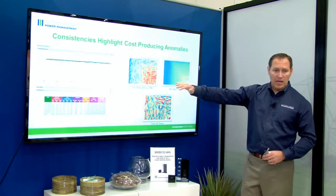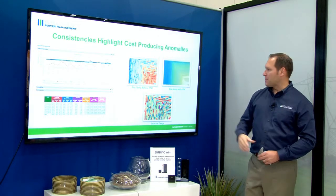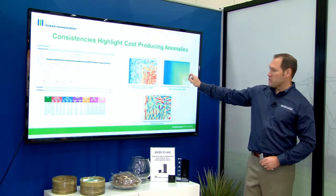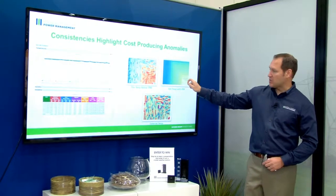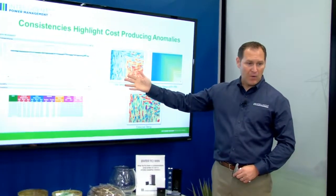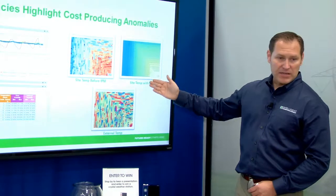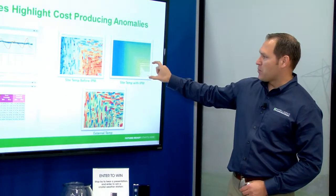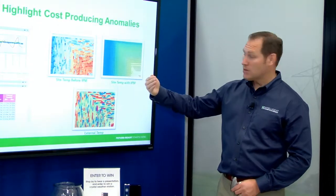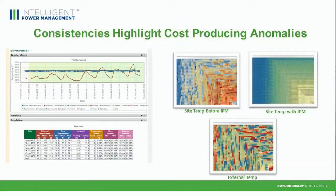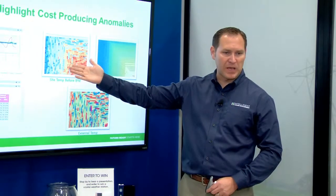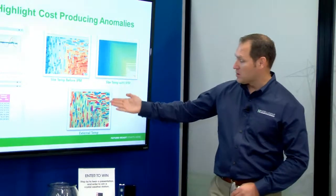Over here, it's taking the same data and putting it into a tree map or heat map format. Each block represents one hour block of time for this particular site — site temperature before and how it's being collected and run. Before: very inefficient, all over the map. After: very consistent. The bright red and orange means it's too hot; blue means it's cooler than nominal temperature; and the greenish yellow in the middle is nominal. If you look to the left — before — it's all over the map, very inconsistent, so you couldn't pick out anomalies based on this.